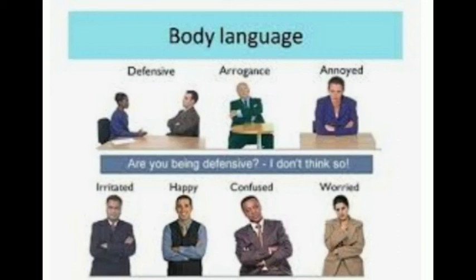Space management, time management, body management — many other things highly essential to be modern, more modern, super modern. Now, there are two types of body language: positive and negative. In the picture you can see the gesture, the defensive nature, the erroneous behavior, the annoyed nature, anger, happiness, confusion, and worry. You can identify people by their body position and the words they utter — and by this you can detect whether someone is telling the truth or a lie.